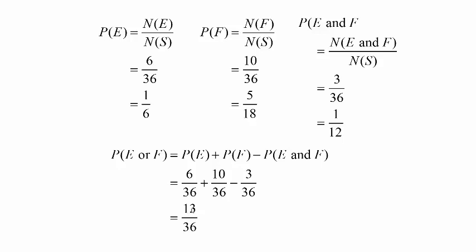When solving these problems, whenever there's an 'or', always ask yourself: can these two events happen at the same time? If so, you must subtract the probability of E and F to avoid double counting.